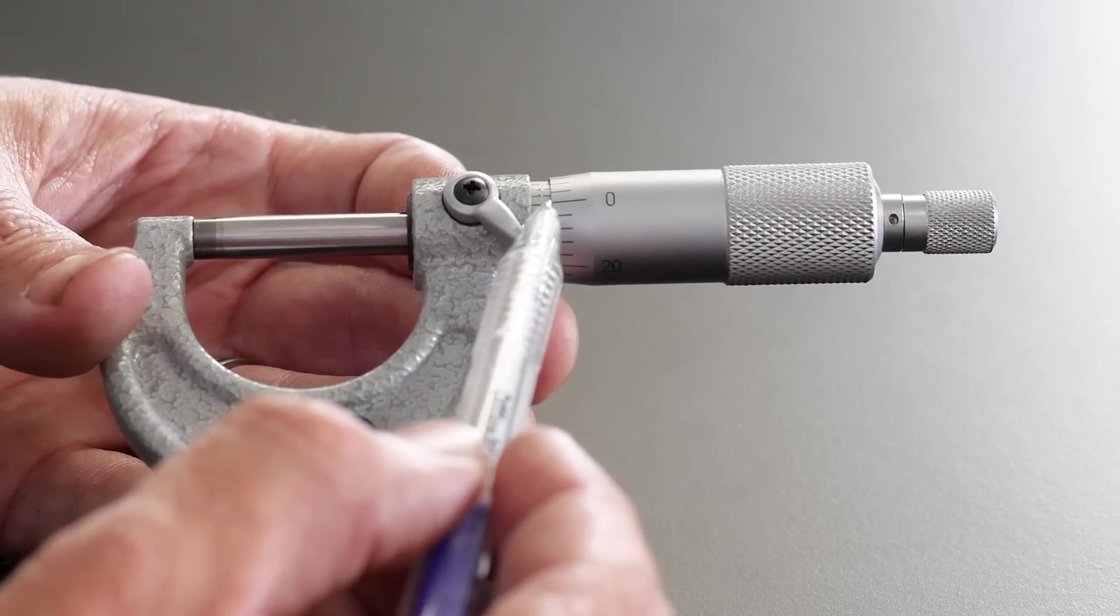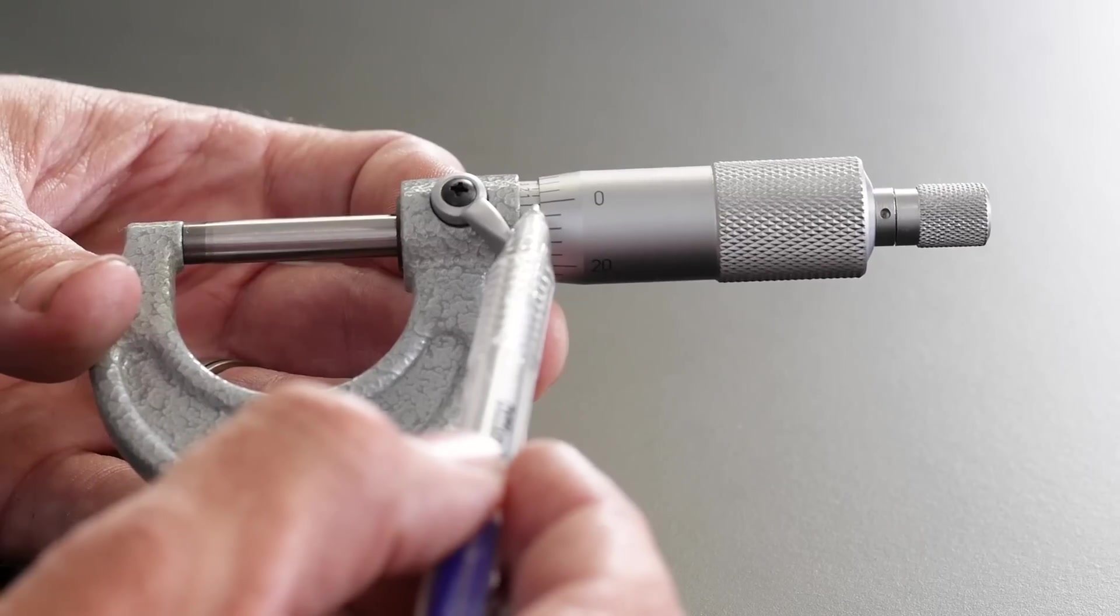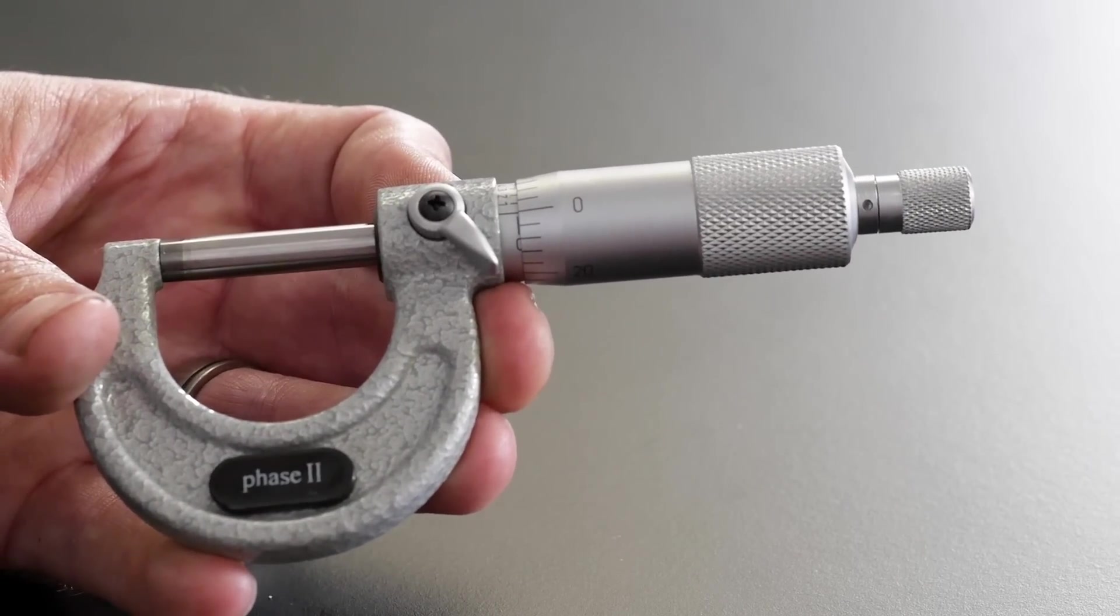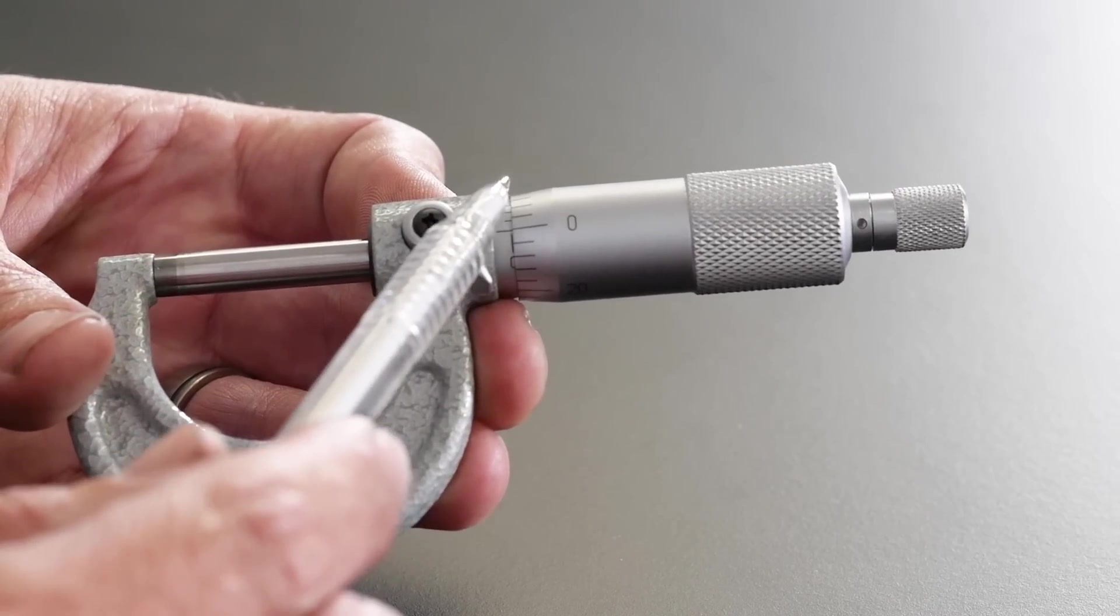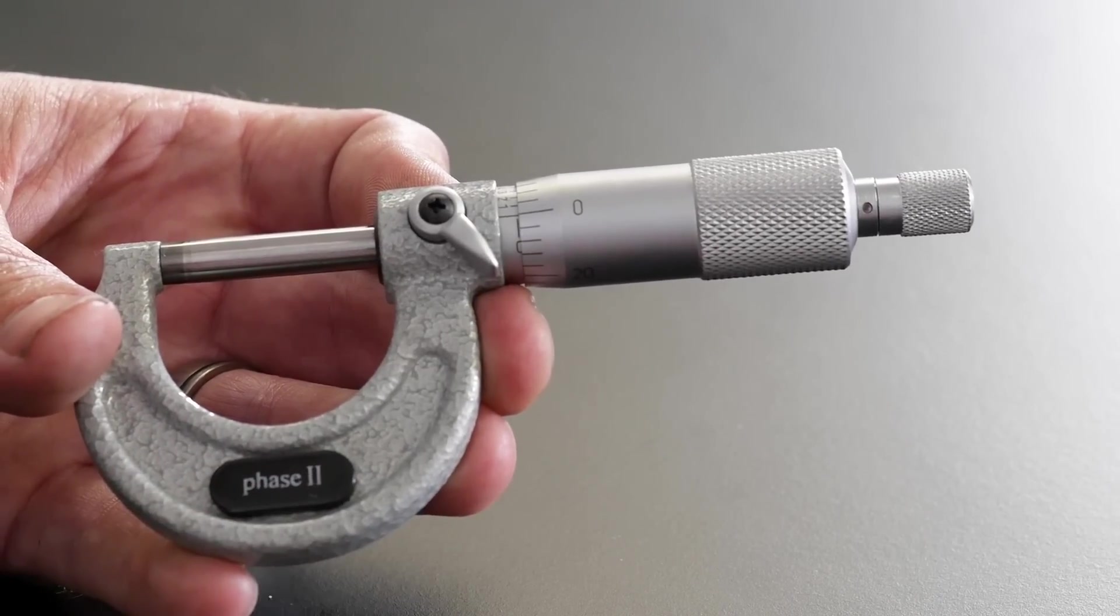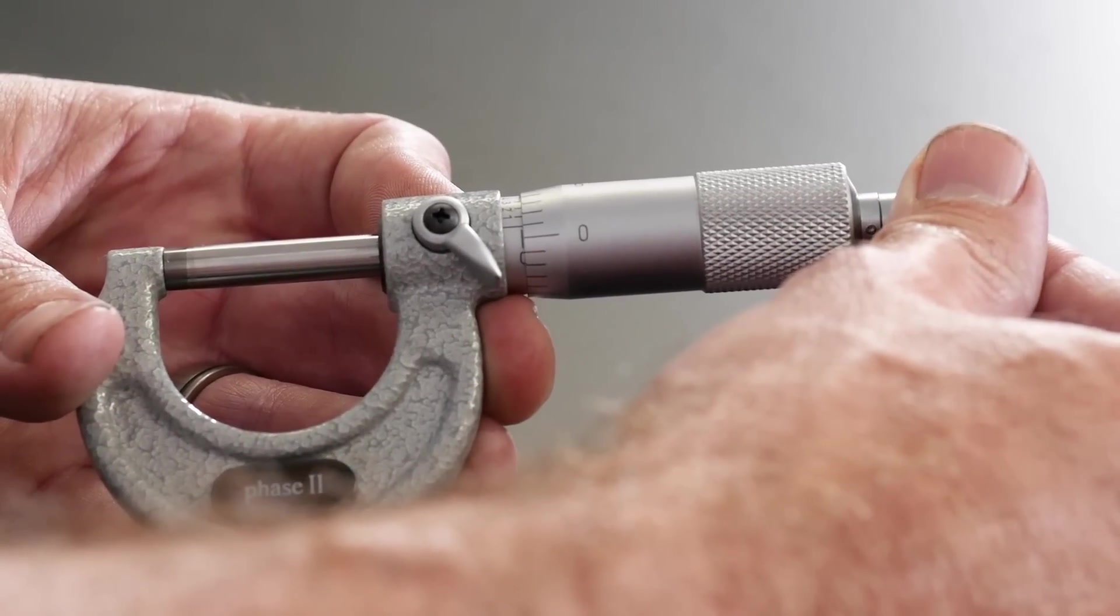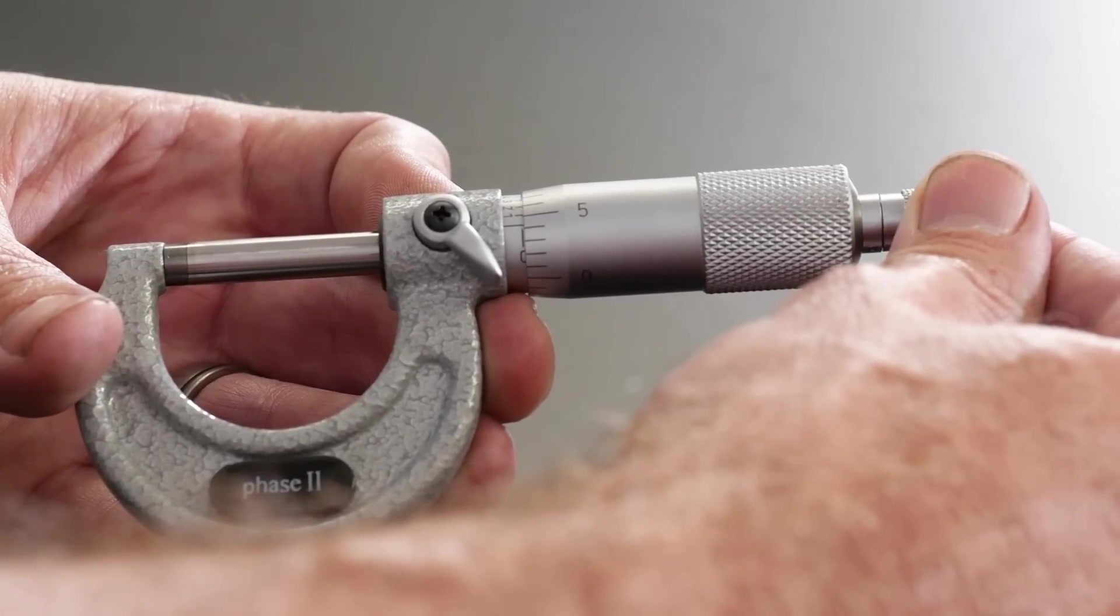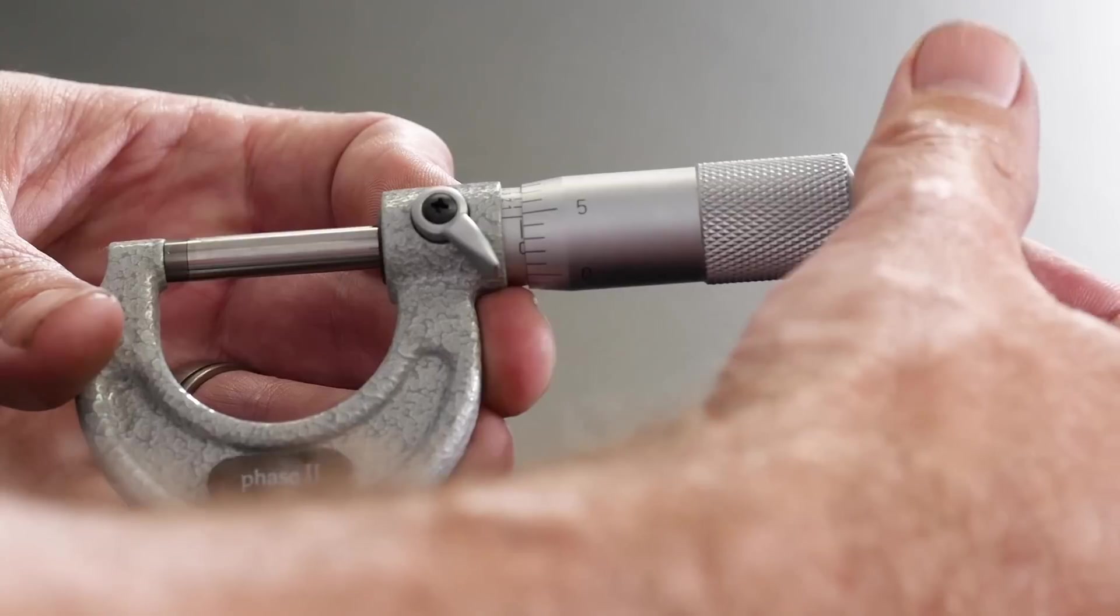We're looking at this zero line here that lines up correctly and accurately with the zero mark on the barrel of the micrometer. Now we're just going to talk about what each of these increments mean. The increments on the thimble of the micrometer represent one thousandths of an inch. So every time we move past one of these increments we're increasing by a thousandths of an inch. At this point we're reading five thousandths of an inch.